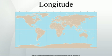Specifically, it is the angle between a plane containing the prime meridian and a plane containing the North Pole, South Pole, and the location in question, with the z-axis pointing from the Earth's center toward the North Pole and the x-axis extending from Earth's center through the equator at the prime meridian. A location's north-south position along a meridian is given by its latitude, which is, not quite exactly, the angle between the local vertical and the plane of the equator.